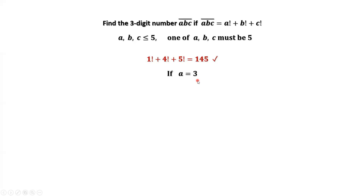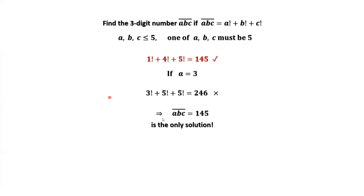The last situation: A equals 3, the leading digit is 3. The maximum combination is 3 factorial plus 5 factorial plus 5 factorial, and the sum equals 246. But the leading digit is not 3, so this is not the answer. We have done all 3 situations. In summary, the three-digit number ABC equals 145 is the only answer.